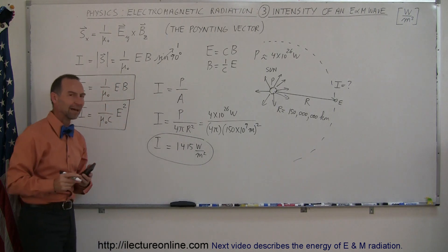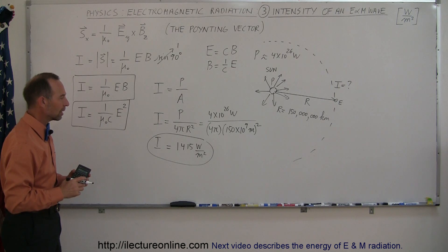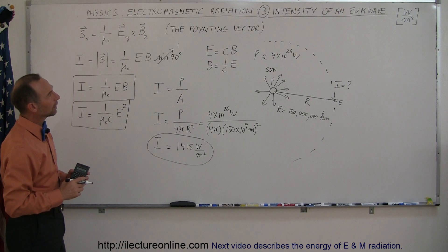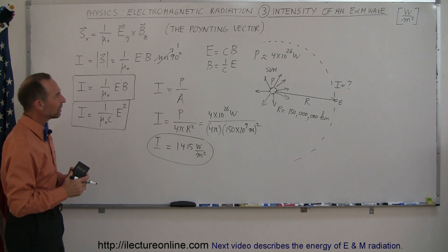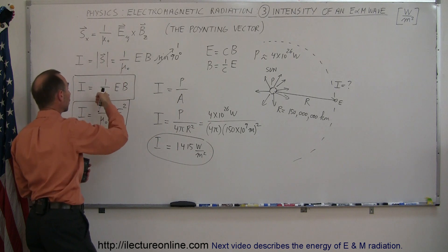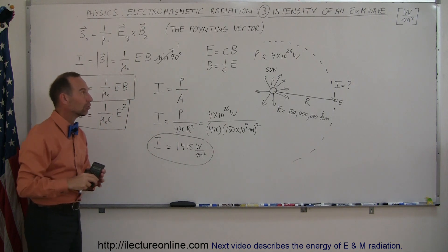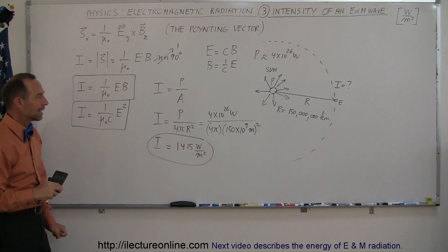Of course, about half of that is either reflected or scattered out. So we get only about half of that energy when it reaches the Earth. So that's a pretty good feel for how we calculate the intensity of an E&M wave and how to do it in a practical sense and how to use the Poynting vector to relate the energy of electromagnetic radiation to the intensity of the radiation.